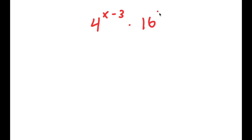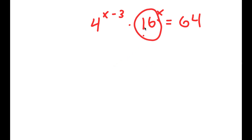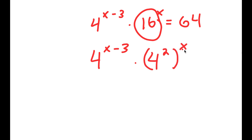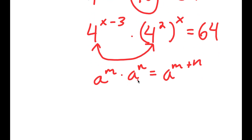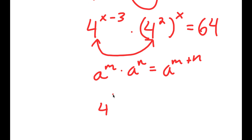In this problem, I have 4 to the power of x minus 3 times 16 to the power of x is equal to 64. To solve this, I'm going to first rewrite 16 as 4 squared. So now I have 4 to the power of x minus 3 times 4 squared to the power of x is equal to 64. Because these two have the same base, 4 squared to the power of x equals 4 to the power of 2x. So I have 4 to the power of x minus 3 plus 2x is equal to 64.